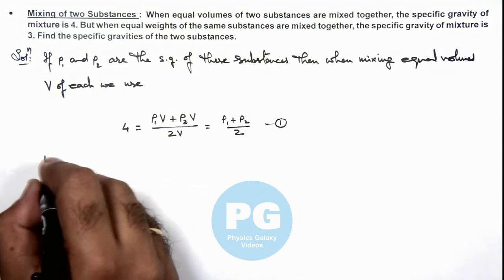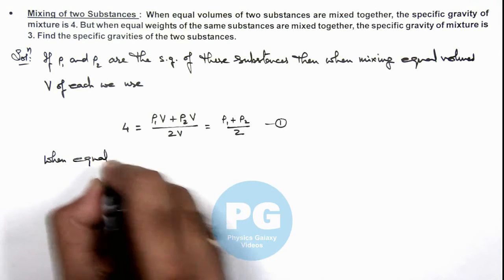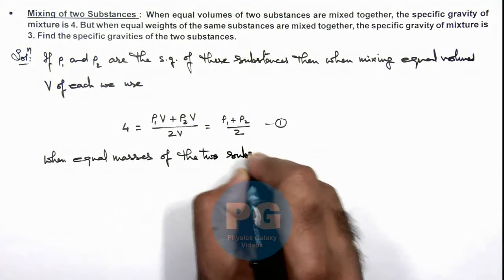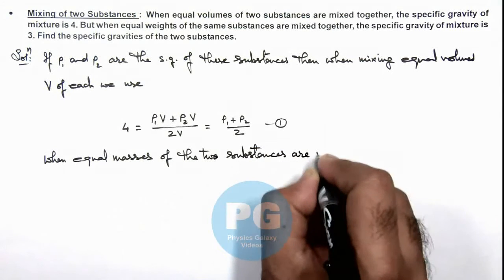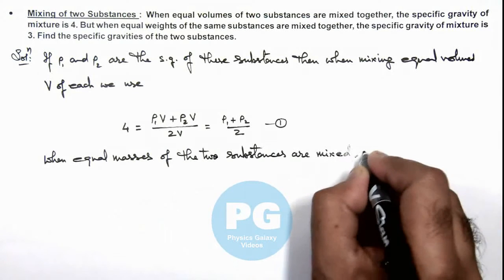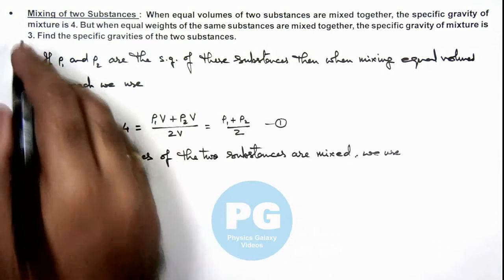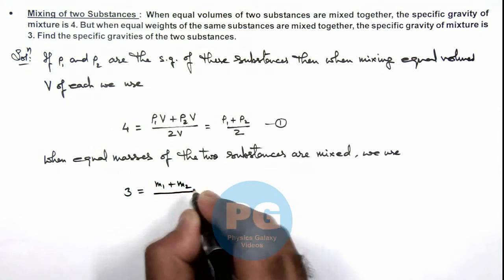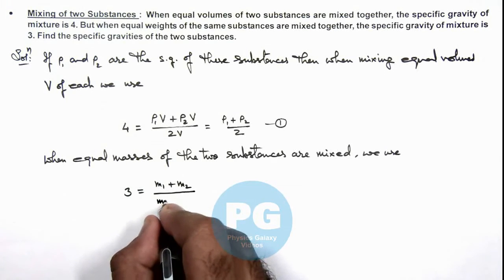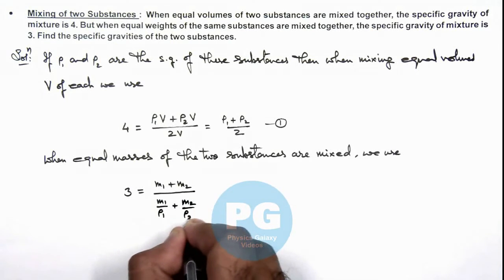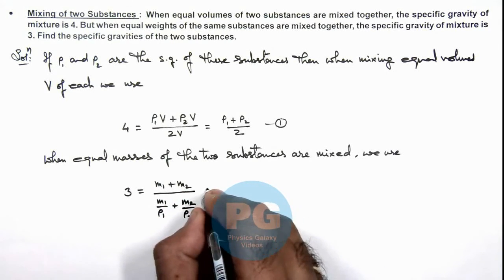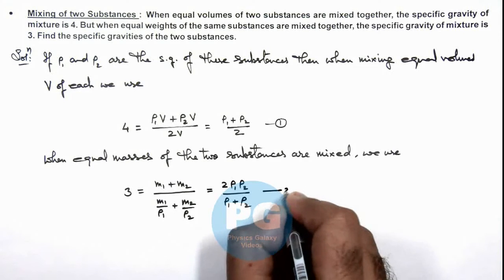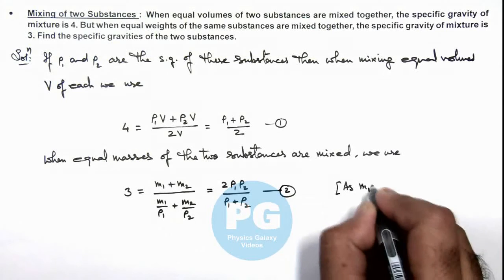When equal masses of the 2 substances are mixed, the mixture specific gravity is given as 3. So 3 equals (m1 + m2) divided by the total volume, which can be written as m1/ρ1 + m2/ρ2. Since masses are equal these cancel out and we get 2ρ1ρ2 / (ρ1 + ρ2), that is Equation 2. Here we are using m1 = m2.